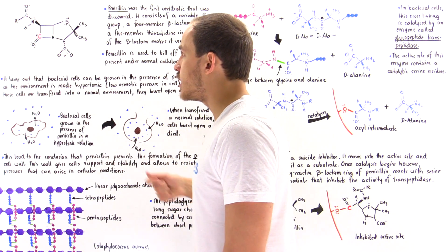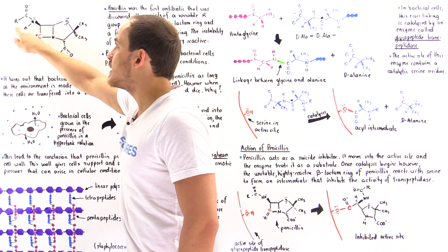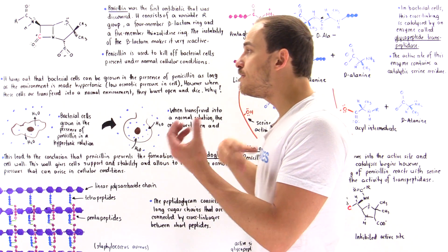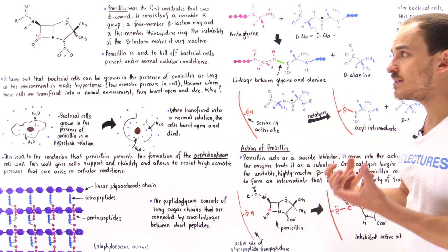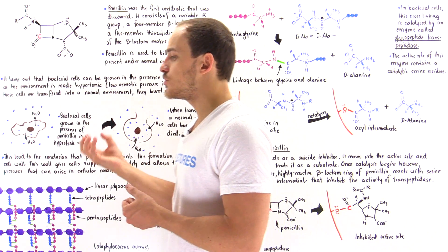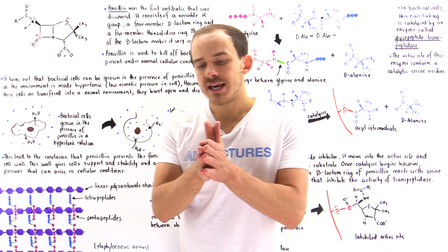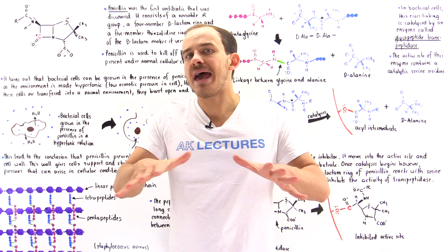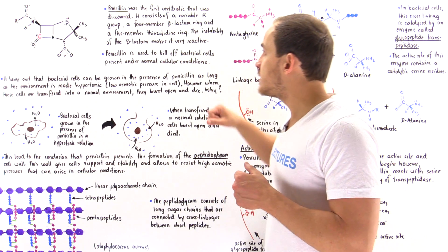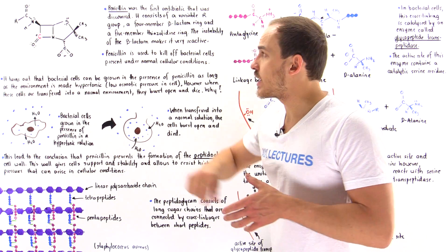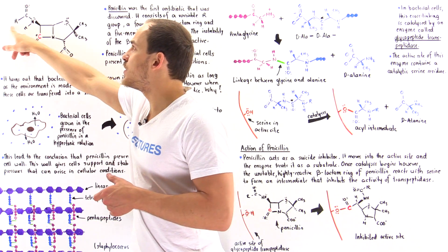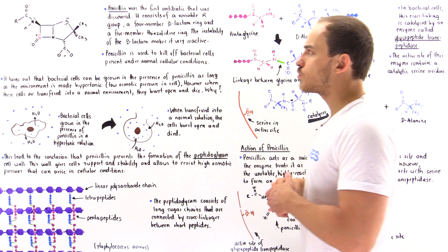The final component of penicillin is the R group — the variable R group that basically gives that penicillin its unique structure. Penicillin is actually a group of many related molecules that all contain the thiazolidine ring, the beta-lactam ring, as well as that unique variable R group.